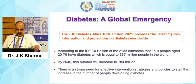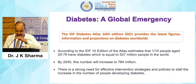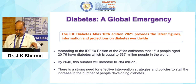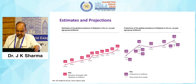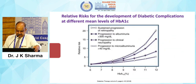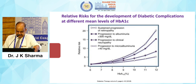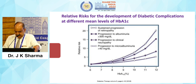I will not go through these global emergencies of diabetes because we all know what IDF, ADA, and RSSDI say about this and the various estimates and projections. But I will take you through the relative risk of development of diabetic complications at different mean levels of HbA1C — progression to clinical neuropathy, progression to albuminuria, macroalbuminuria, and sustained progression of retinopathy. Retinopathy comes at the top.